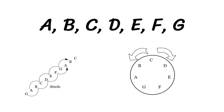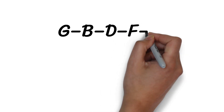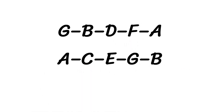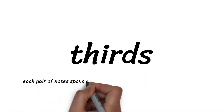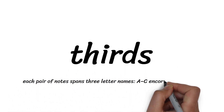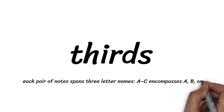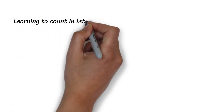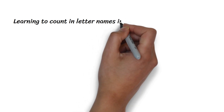You will read music much more fluently if you also practice reading alternate letter names, as marked in the figure: G, B, D, F, A or A, C, E, G, B. This is called counting in thirds, because each pair of notes spans three letter names — for example, A to C encompasses A, B, and C. Learning to count in letter names is a fundamental musical skill.